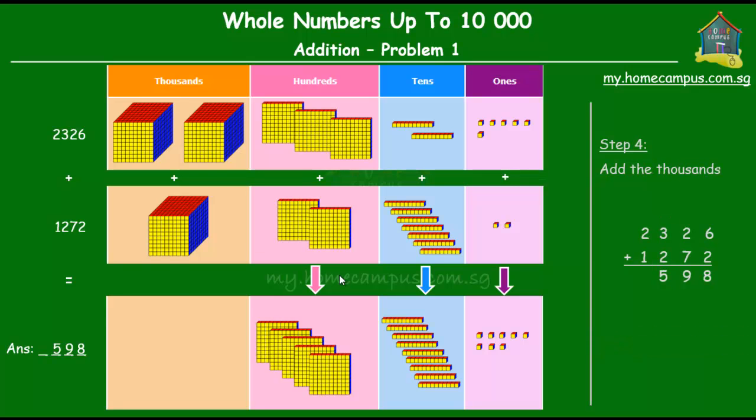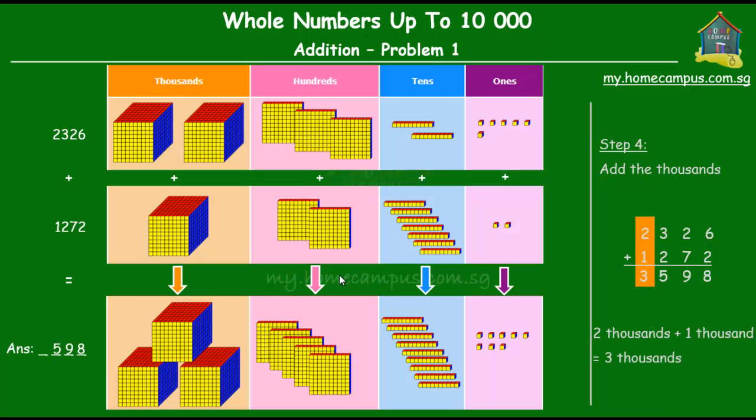Lastly, we add the thousands. We have two thousands from the first number and one thousand from the second number that gives us three thousands. And that goes in the thousands place in the answer. So the sum of 2326 and 1272 is 3598.